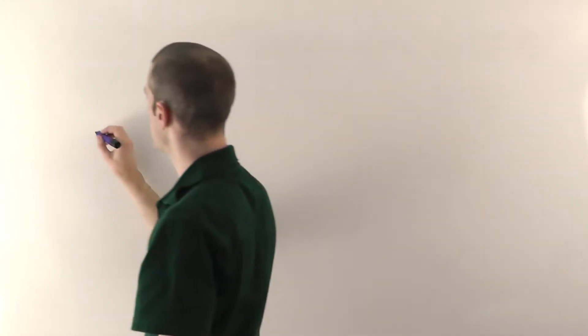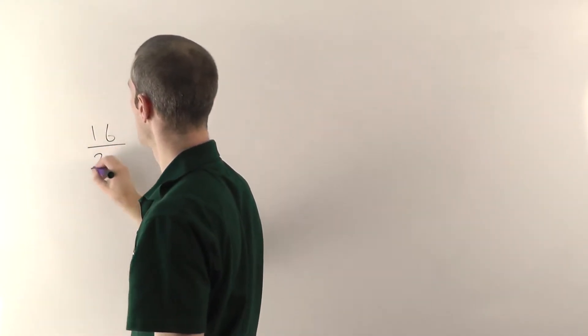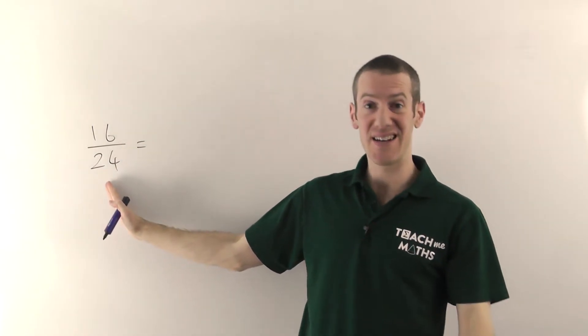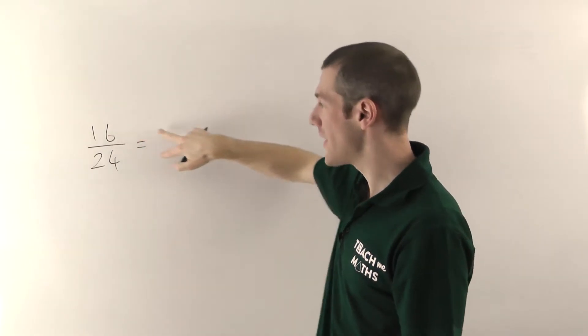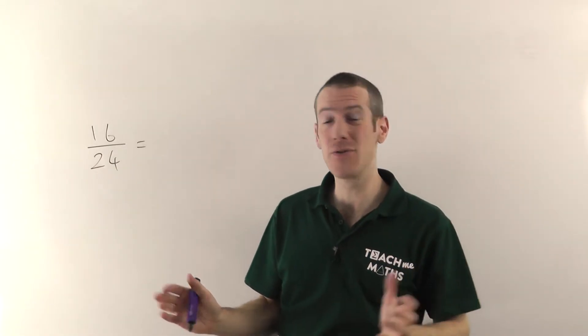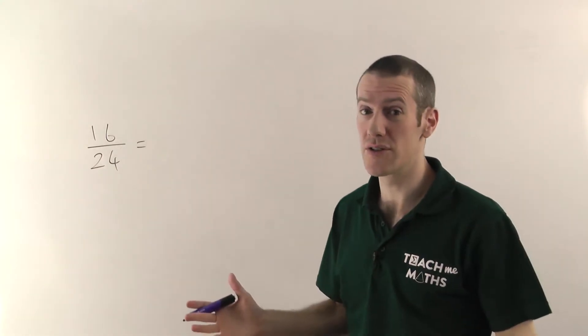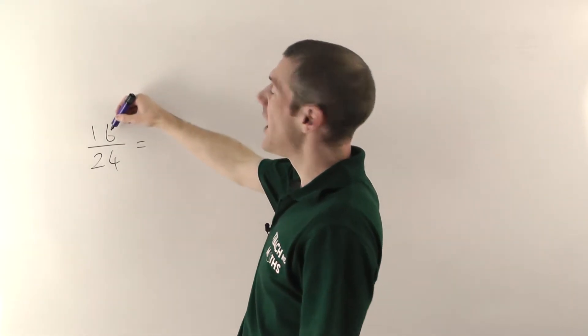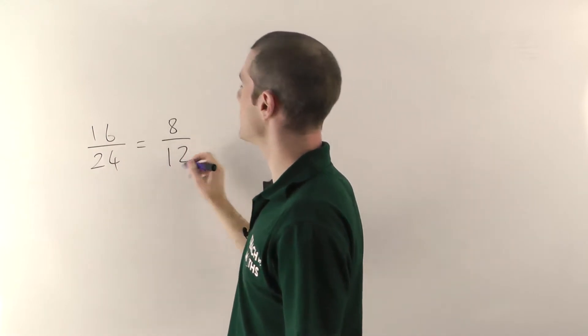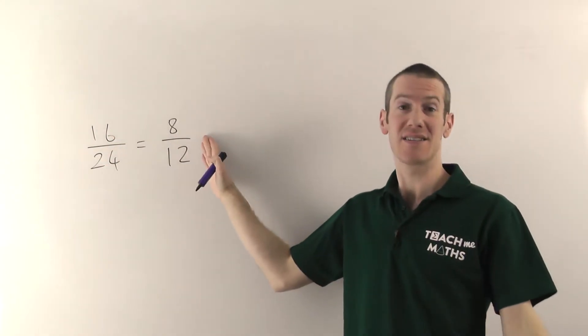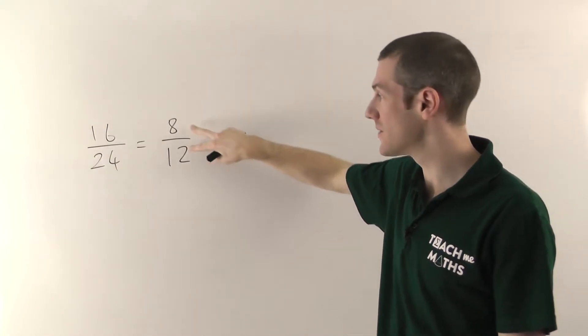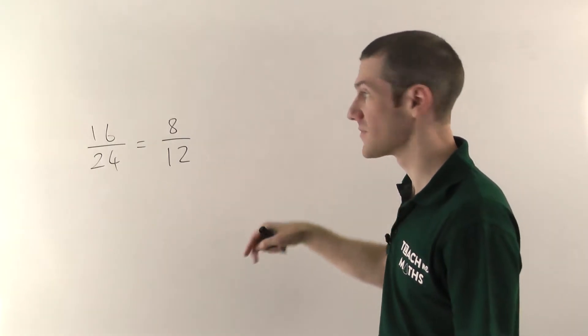So start with 16 over 24. We're just trying to divide the top and bottom by any number, as long as it's the same number for both, and that should make them smaller. So we need to think what number divides into 16 and 24. Well two goes in, so let's divide them by two. Half of 16 is 8, half of 24 is 12. We've divided them both by 2. Great, it's simpler. Although we could divide these two by something else as well. We could divide them down and make them even smaller. So let's keep going.